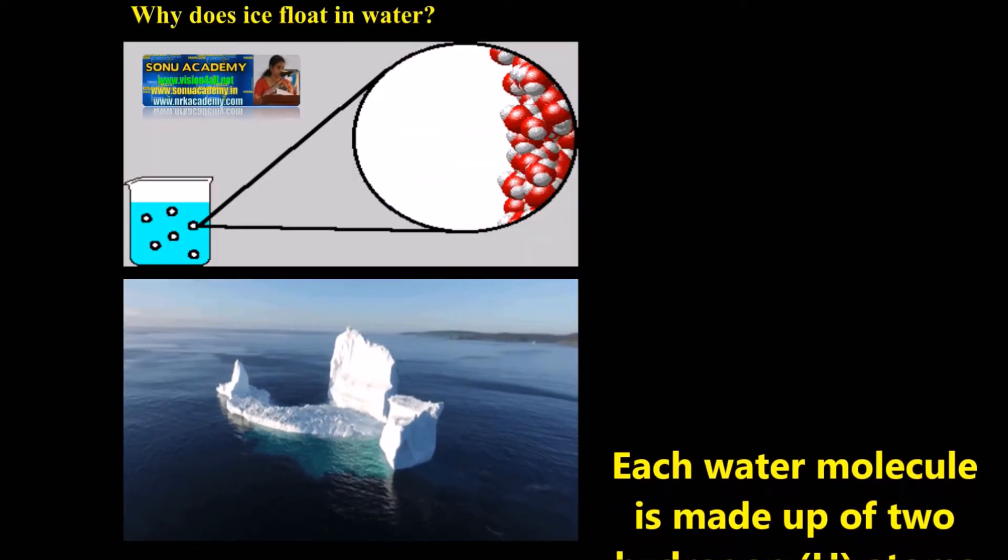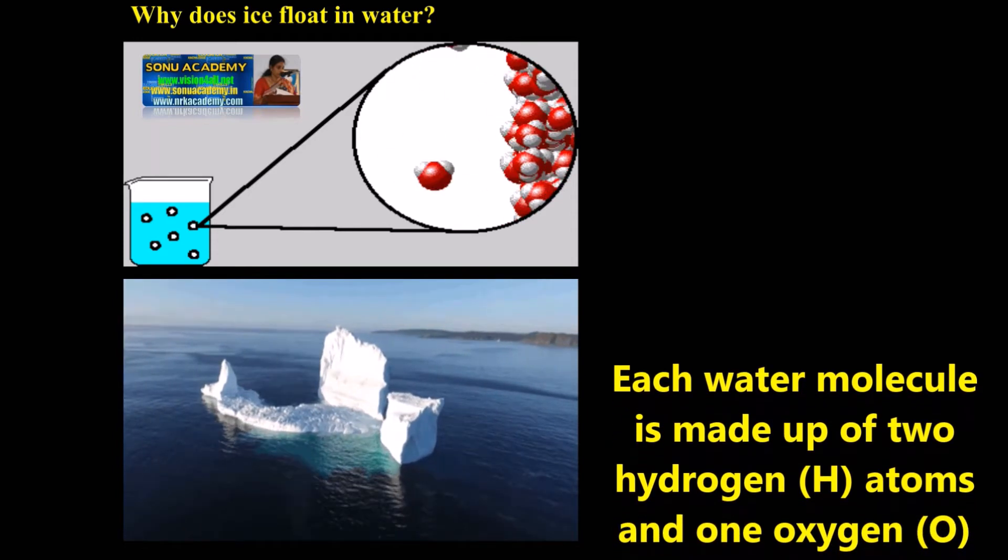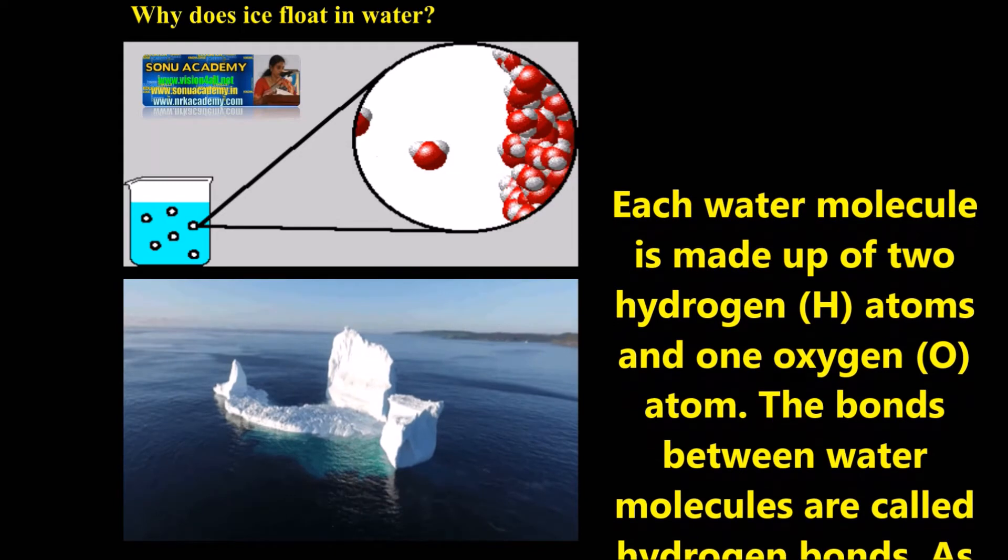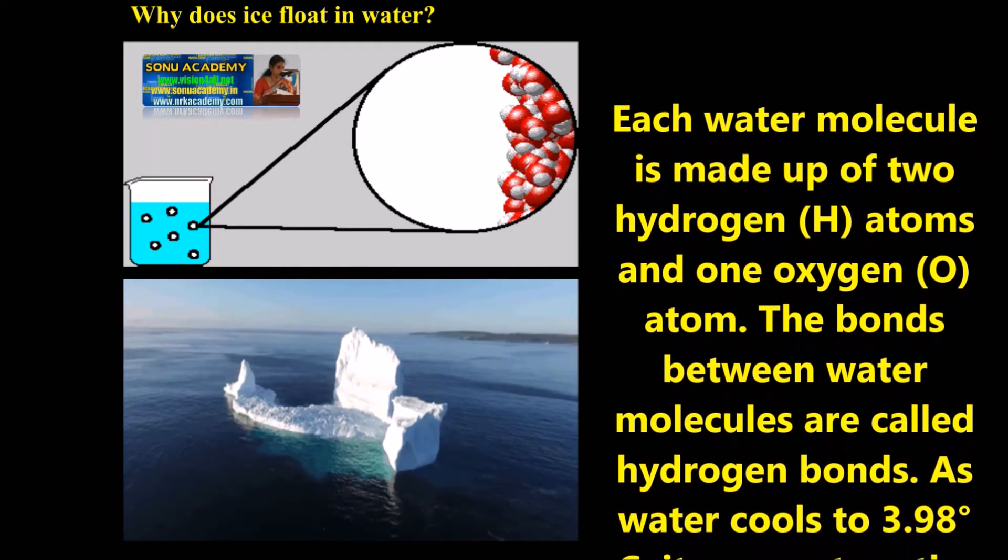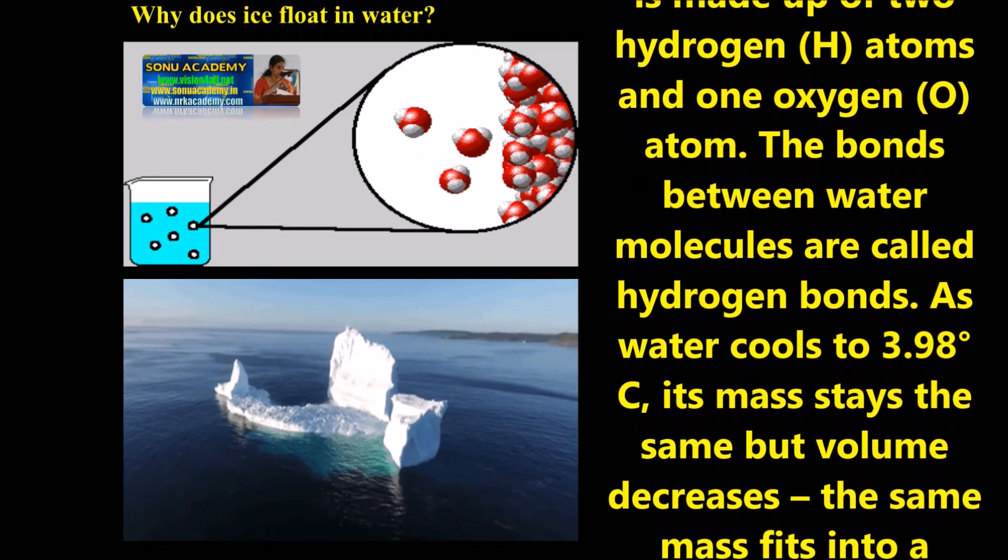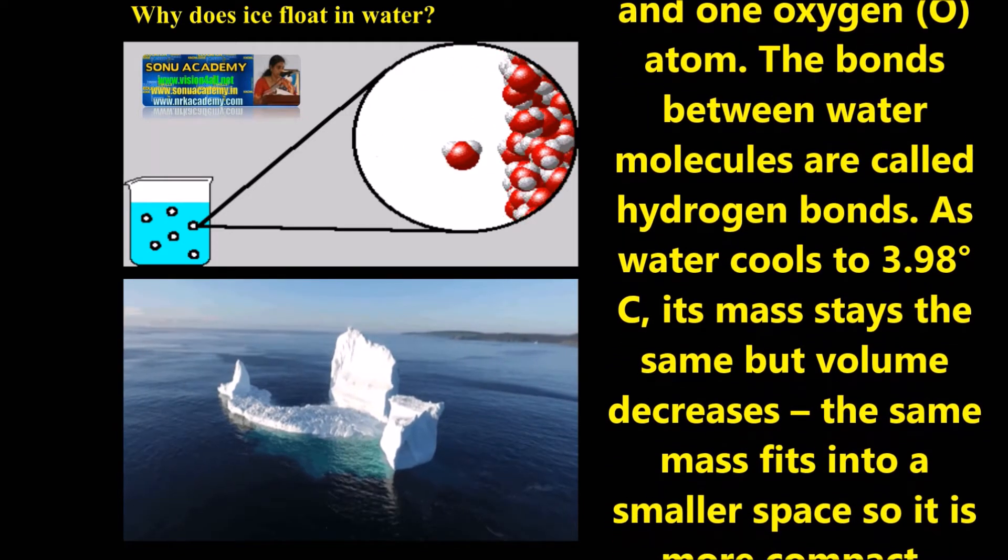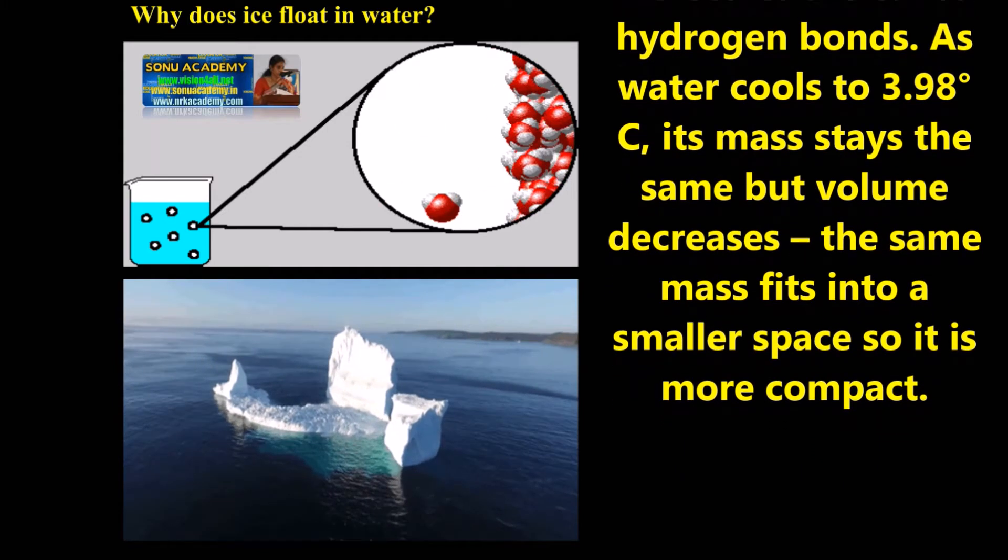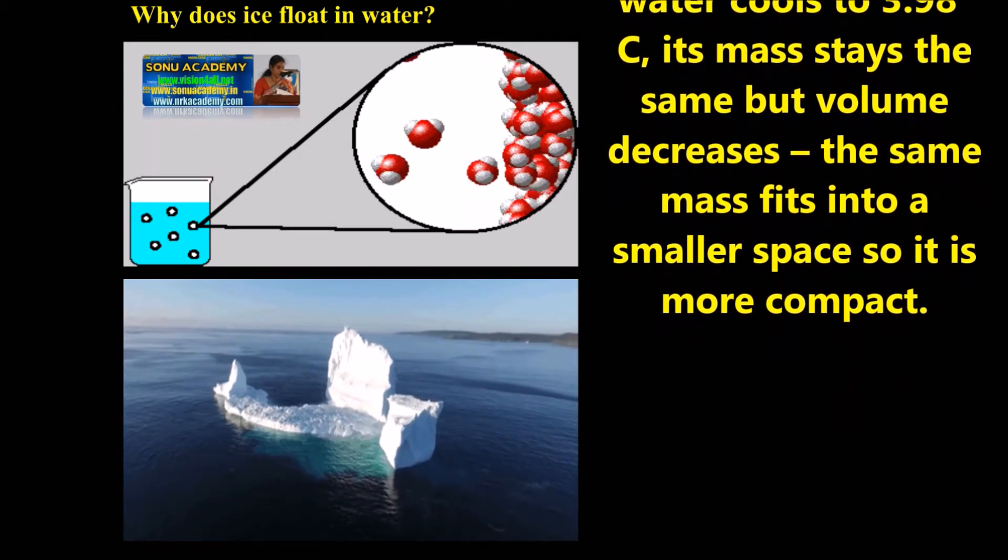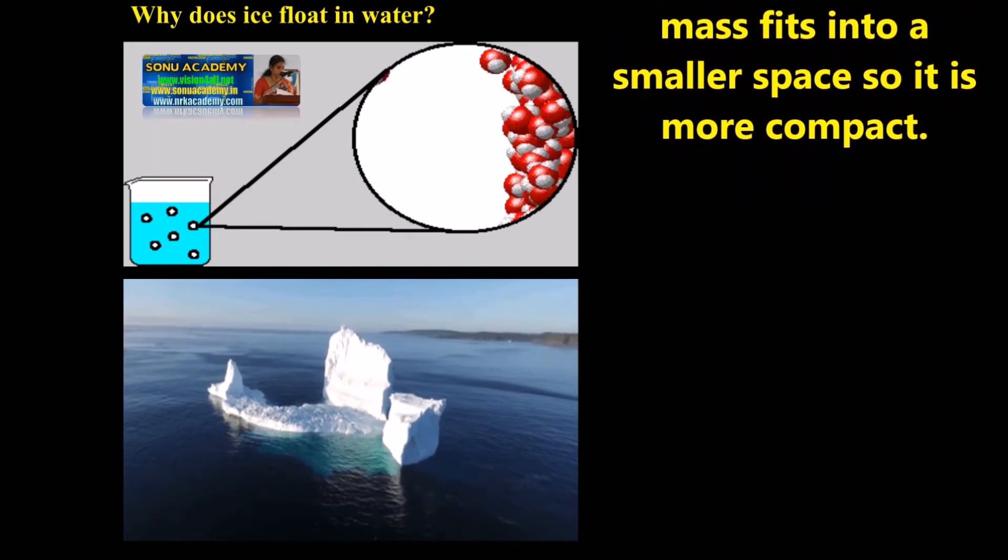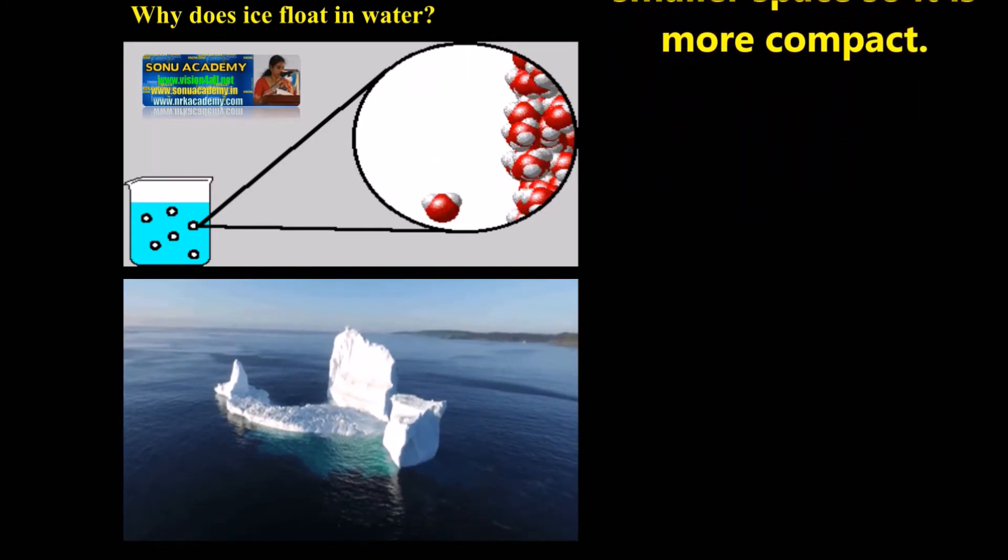Children, now let us discuss why ice floats in water. Each water molecule is made up of two hydrogen atoms and one oxygen atom. The bonds between water molecules are called hydrogen bonds. As water cools up to 3.98 degrees centigrade, its mass stays the same but volume decreases. As the mass fits into a smaller space, it is more compact.